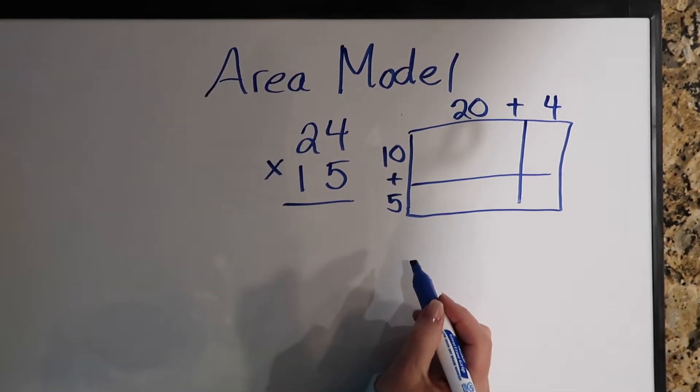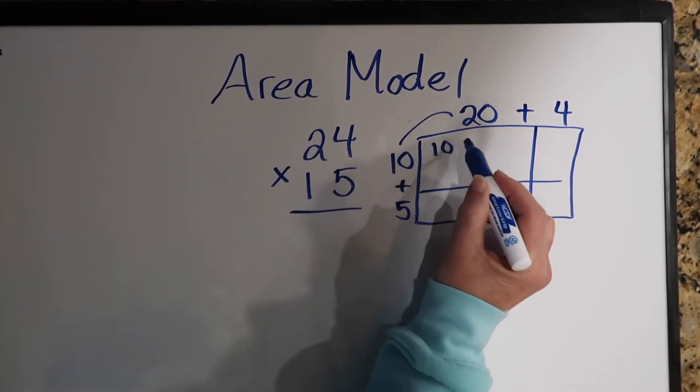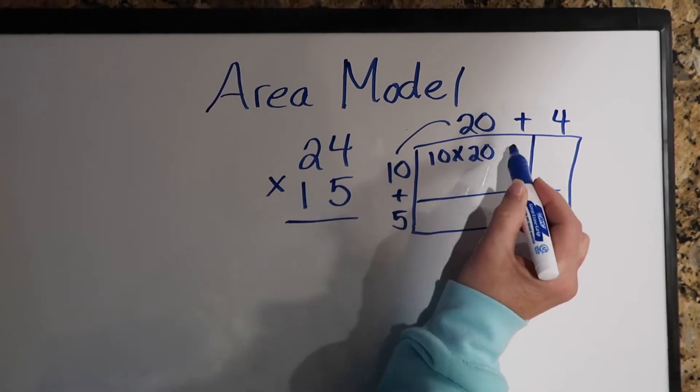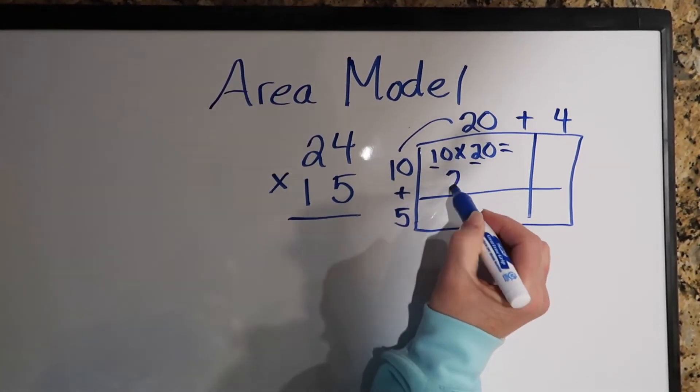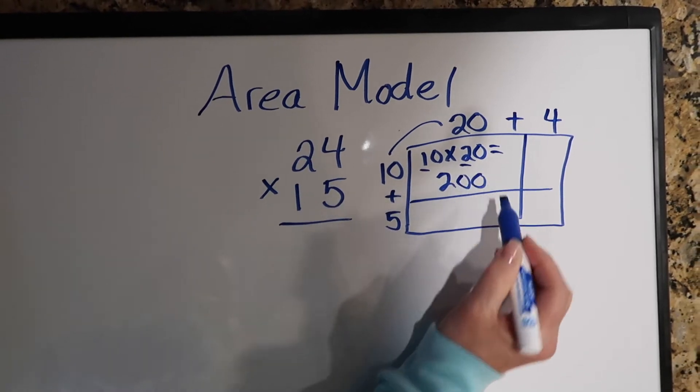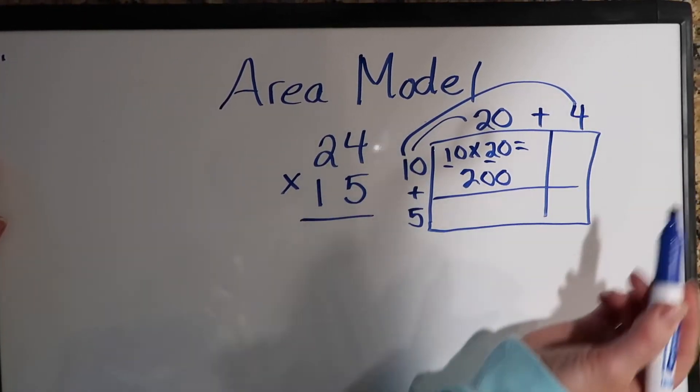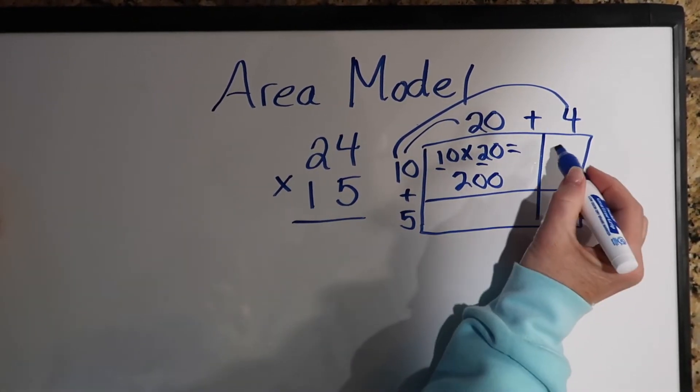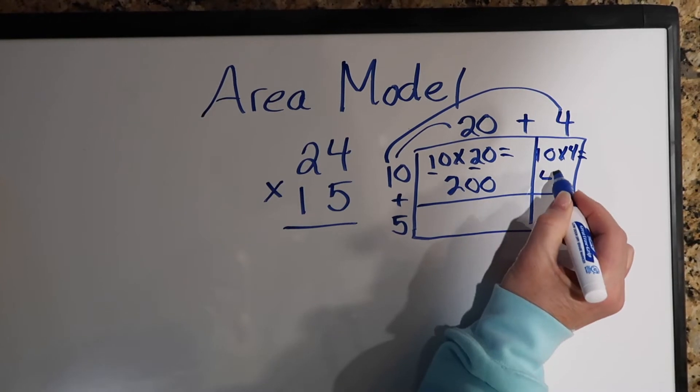Now what we're going to do is start with the 10 and multiply that by the 20. And if you know your basic facts, 1 times 2, that is 2, and then bring the two zeros over for 200. Our next two factors, we should say, is 10 times 4, which is 40.